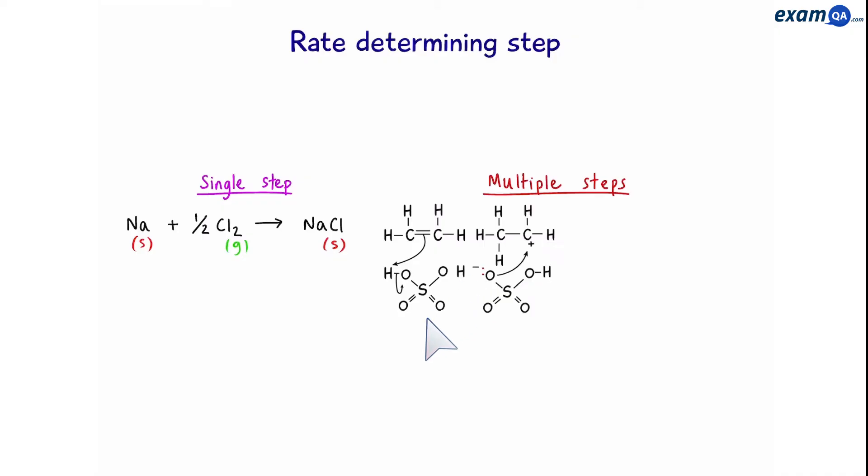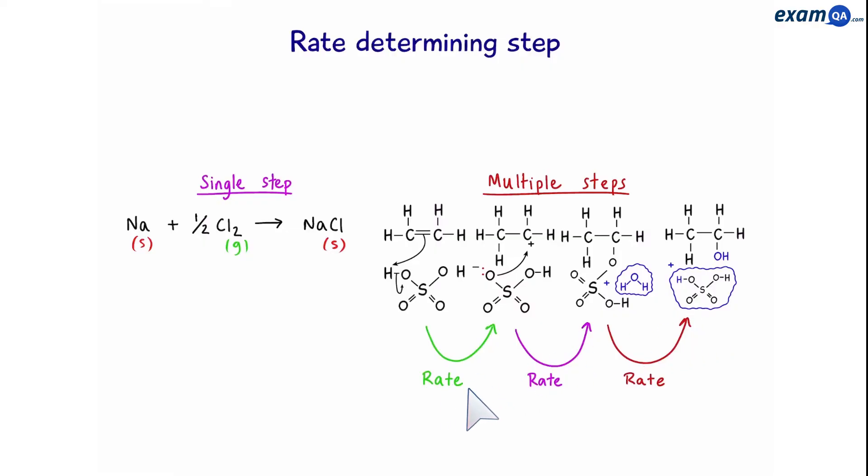For example, ethene reacting with sulfuric acid to form ethanol. In this case, each step or stage has its own speed. When talking about rate determining steps, we're going to be talking about reactions that have multiple steps.